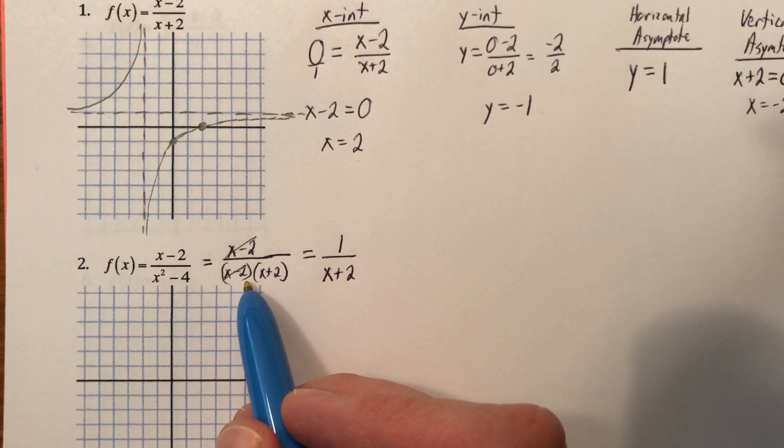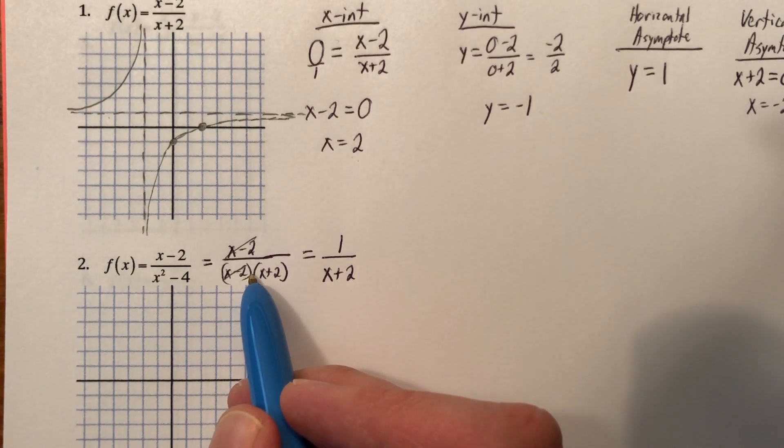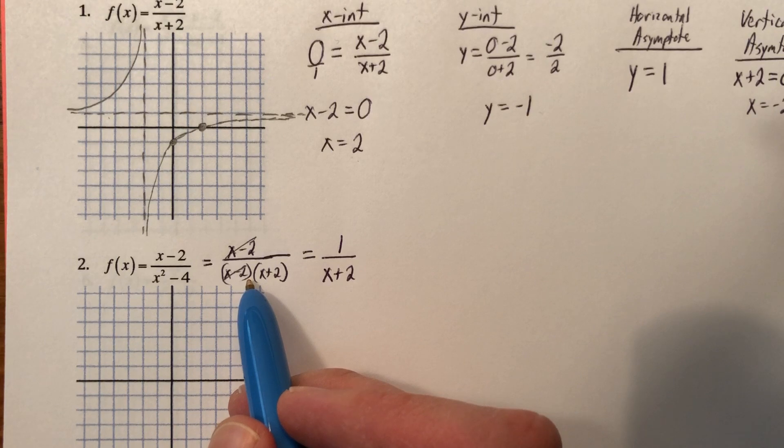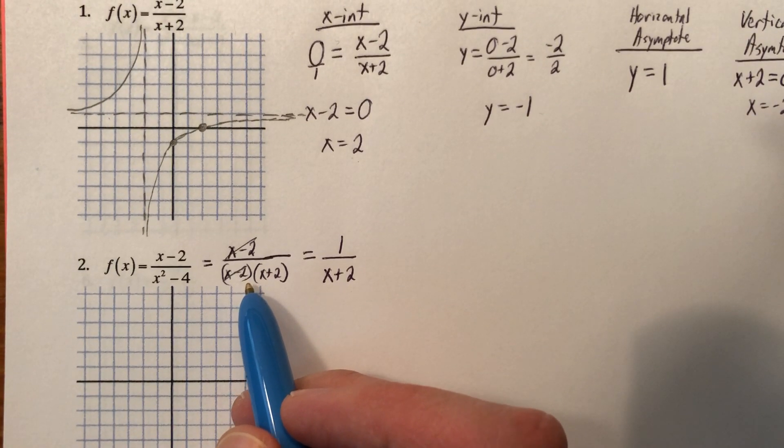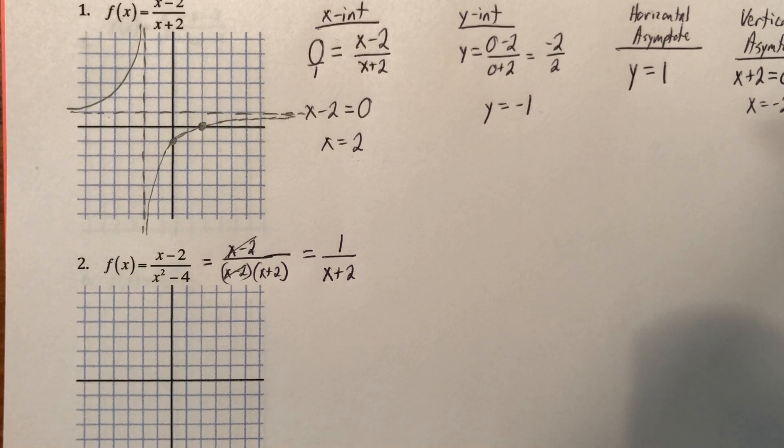You can argue all kinds of ways. You could say it's infinity. You could say it's 1. You could say it's 0. You could make all kinds of arguments. Mathematicians don't know what 0 divided by 0 is. It is undefined. It is indeterminate.